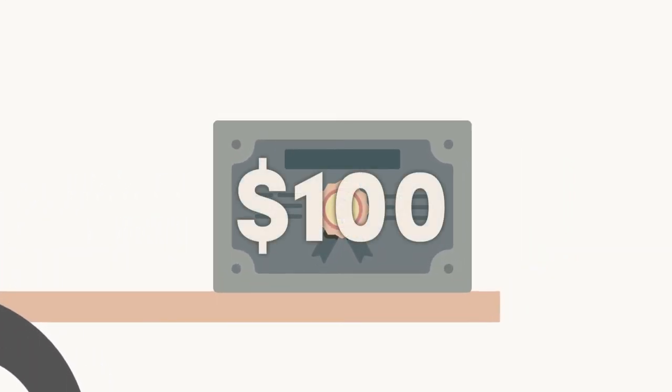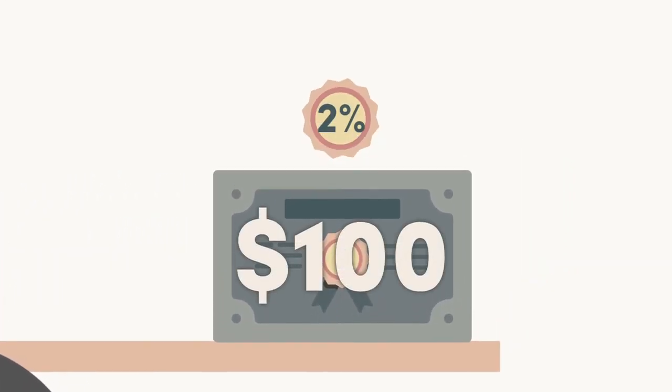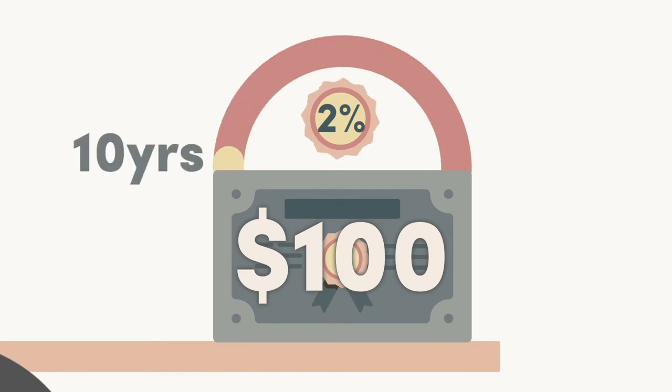Let's say you bought a 10-year treasury bond and you bought it for $100. This bond has a 2% coupon and matures in 10 years.